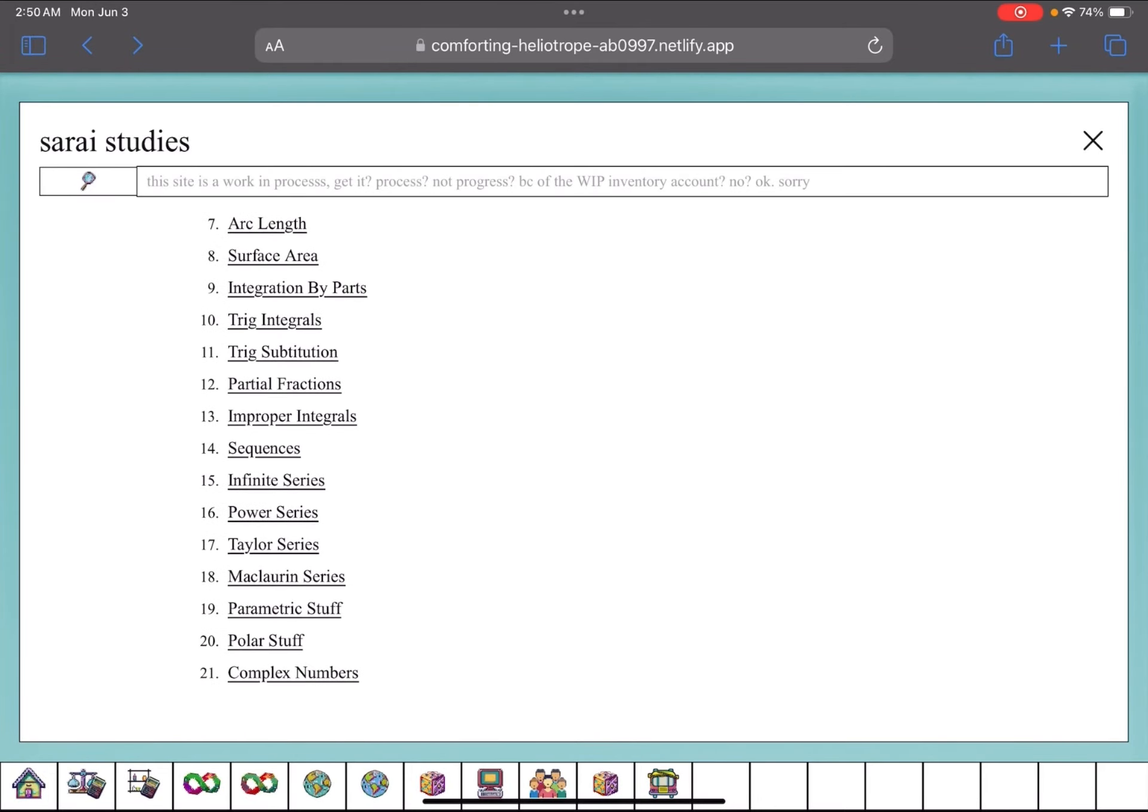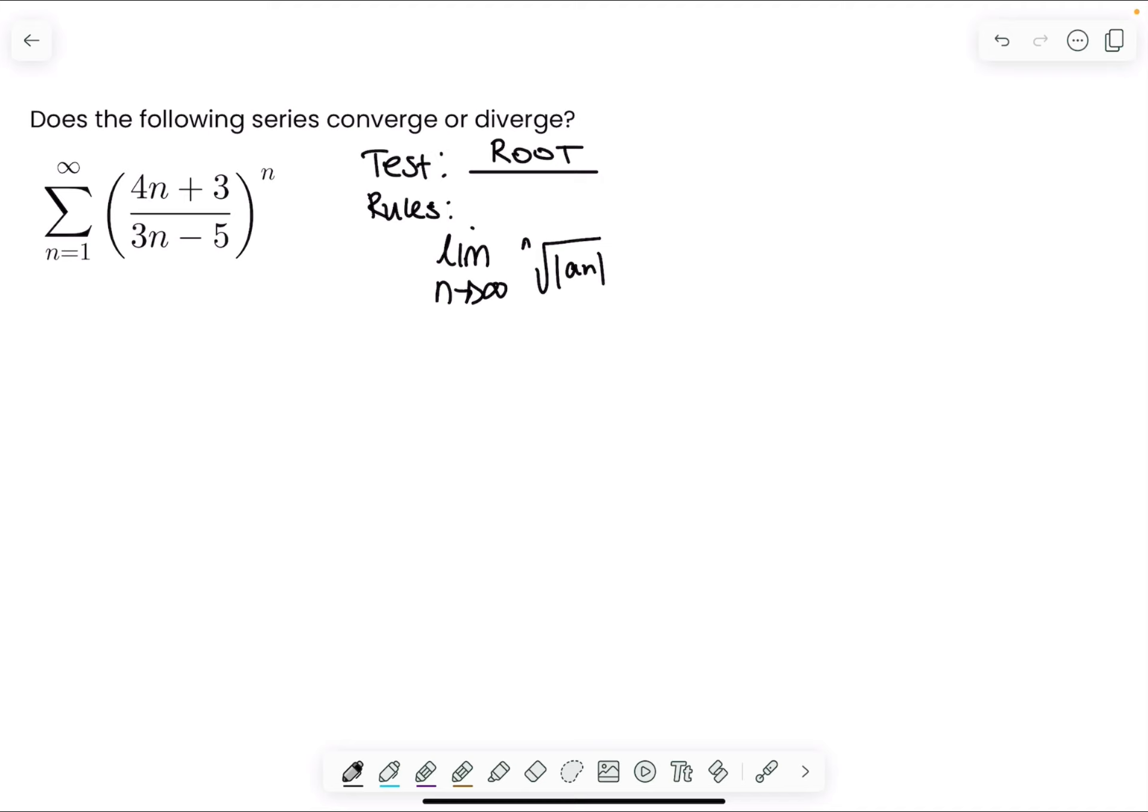Because the rule for the root test is based on the limit as n approaches infinity of the nth root of the absolute value of your sequence. And that's equal to a limit, or at Rutgers we call it rho, even though it's a literal p, we pronounce it as rho.